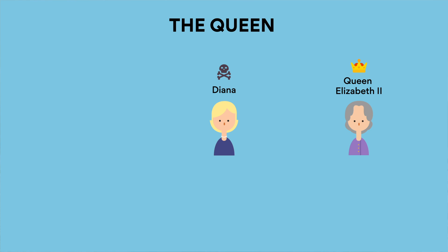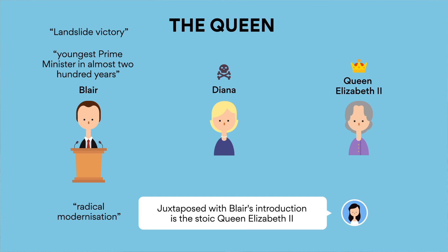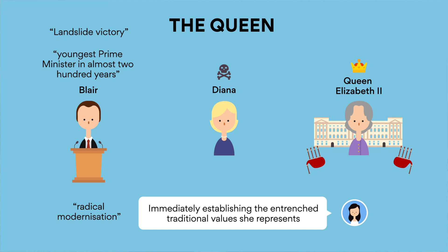Set in the weeks leading to and post the infamous death of Princess Diana in 1997, the Queen captures the private moments of the monarchy's grief and loss and Queen Elizabeth II's inner conflict as she attempts to keep her private and public affairs separate. The film opens with Blair's landslide victory in the election as the youngest prime minister in almost 200 years, preempting viewers of the radical modernization that's to come as he takes the reins. Juxtaposed with Blair's introduction is the stoic Queen Elizabeth II, residing in Buckingham Palace with bagpipes outside playing in a ritual unchanged since Queen Victoria, immediately establishing the entrenched traditional values she represents.